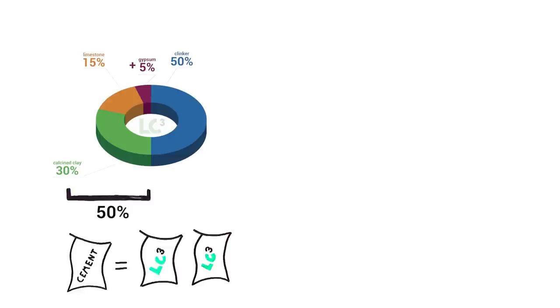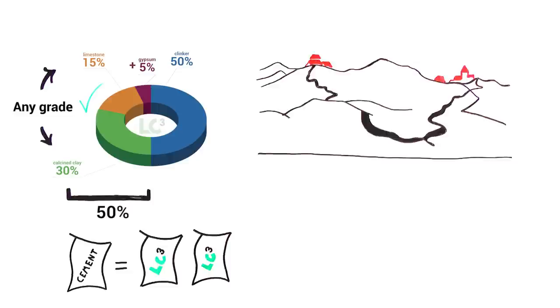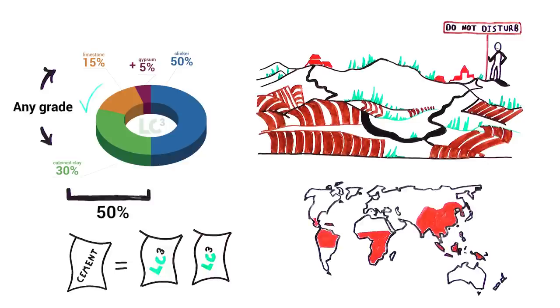Better yet, we can use limestone and clay of lower grade normally discarded by industries. No precious agricultural soil or topsoil will be used. Also, clays are abundantly available in regions where the highest cement consumption is expected. LC3 aims to provide local solutions to the global demand.